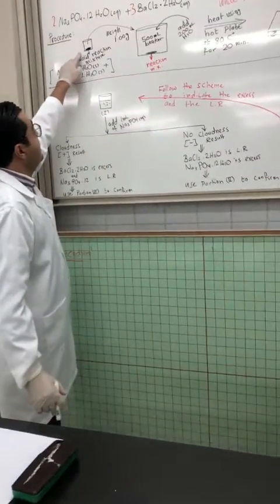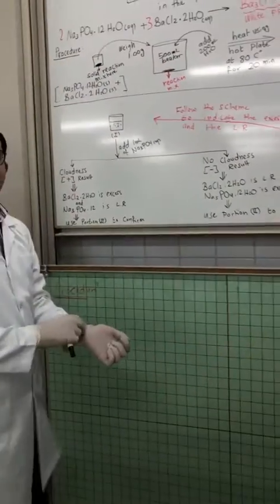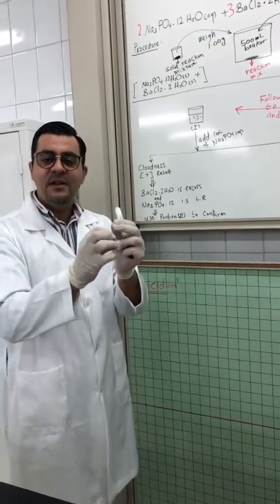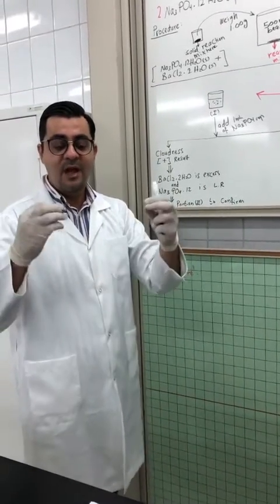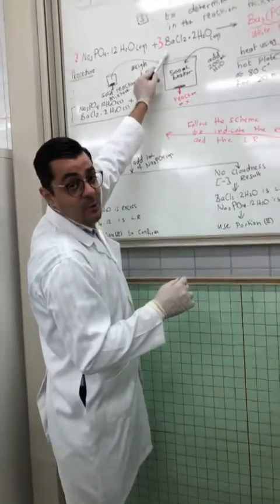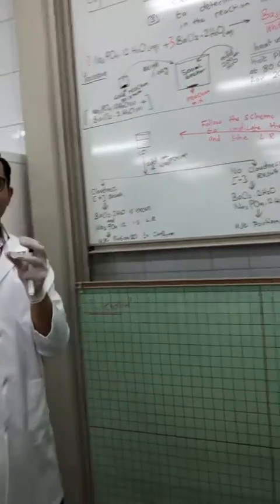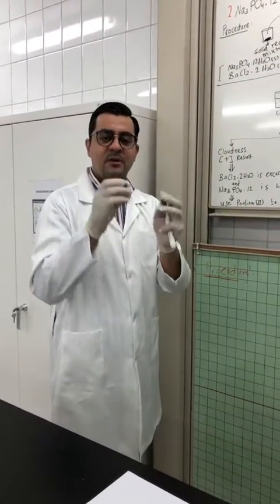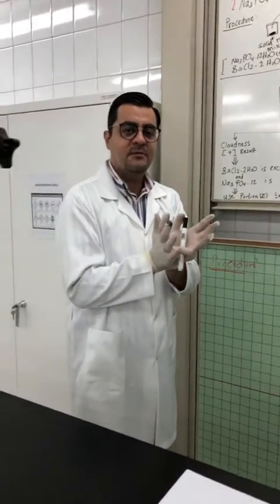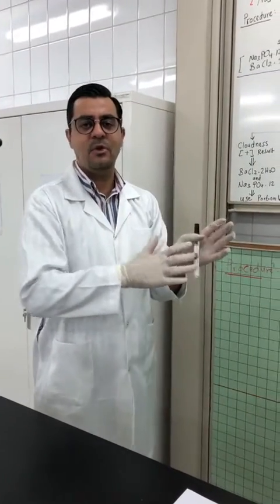We will start with the solid reaction mixture — the two reactants taken in their solid state and mixed together. According to the equation, the reaction will take place in aqueous solution, which means nothing will happen before adding water. If we just mix the two solid reactants, the reaction will not take place. To initiate the reaction, we add water. When you add water, you convert them from solid state to aqueous state, and the reaction will immediately take place.